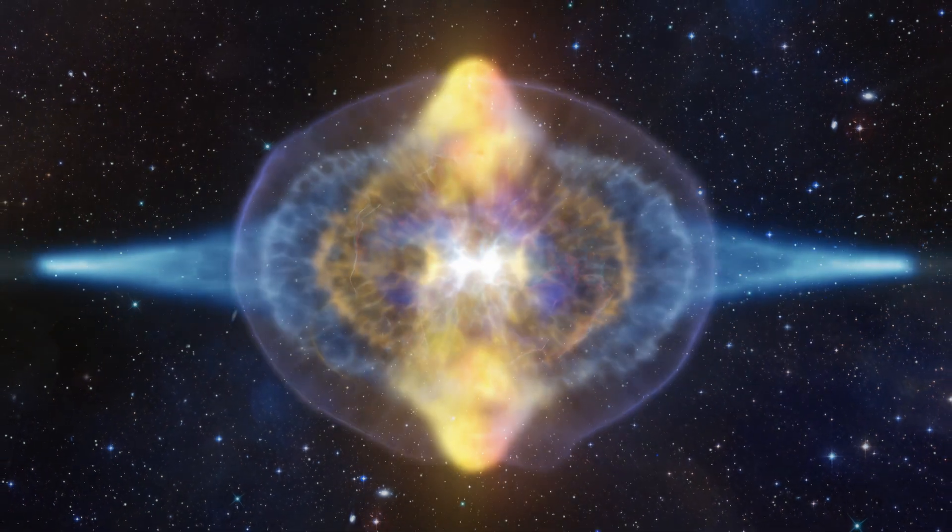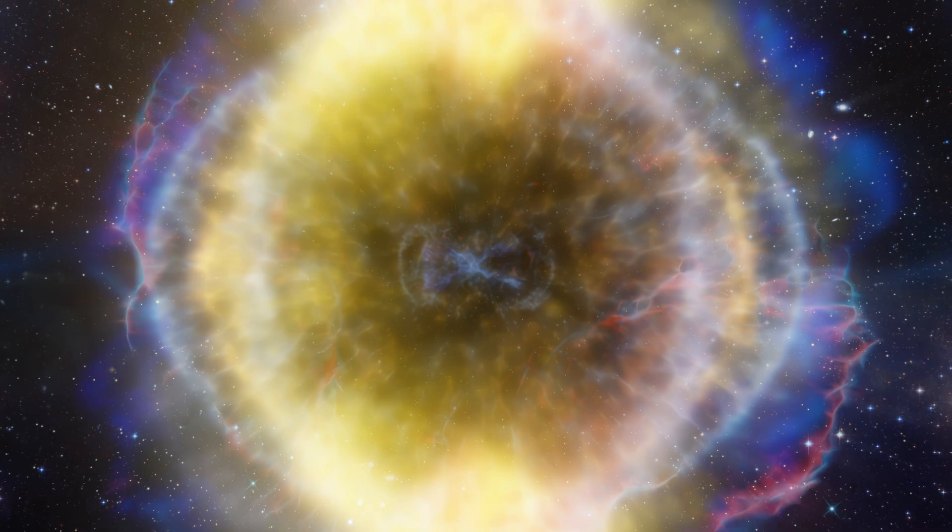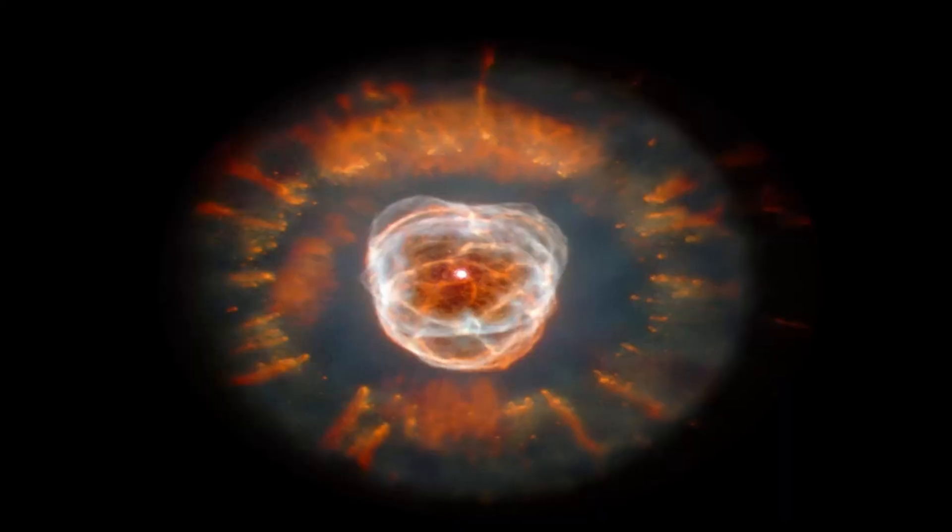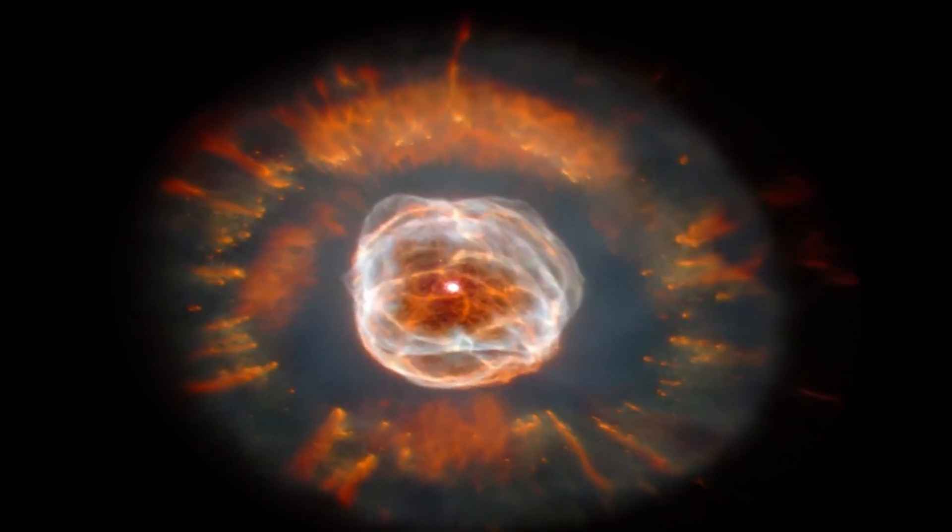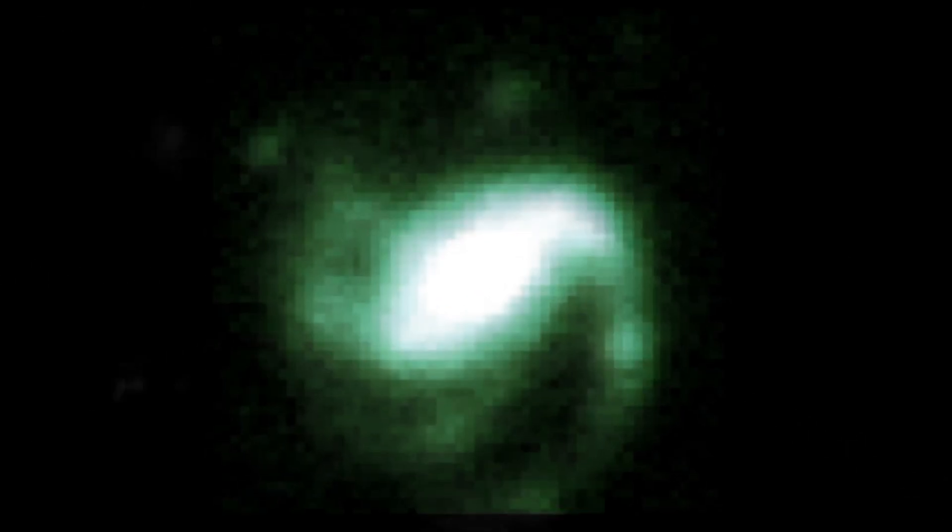Current observations have shown that the star began to dim in 2023, a behavior similar to the pre-eruption phase noted before its 1946 outburst. This has led astronomers to believe it might erupt again soon, possibly by the end of 2024 or early 2025.